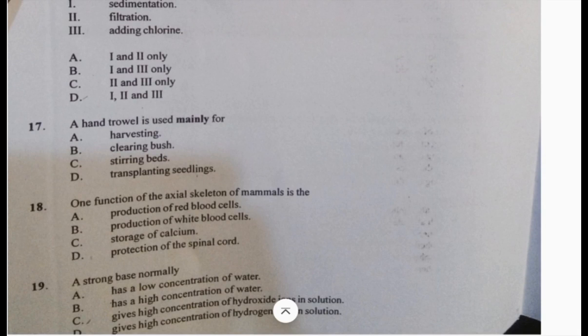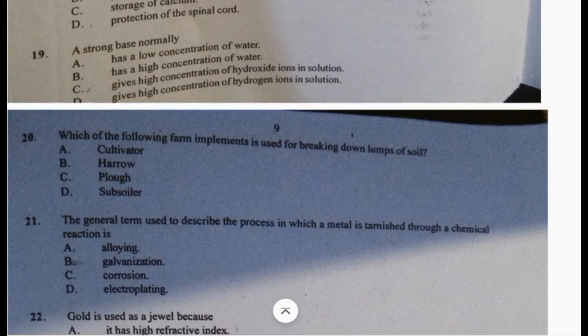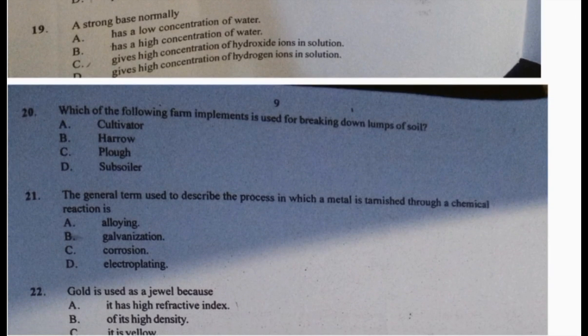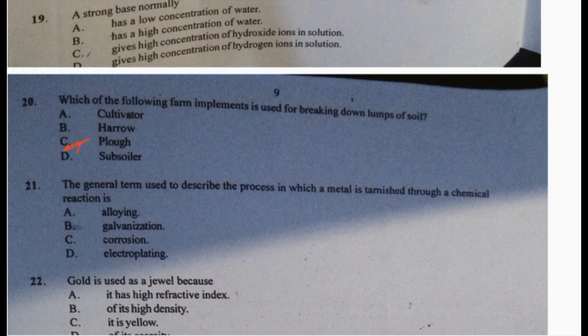Number 19: a strong base normally gives high concentration of hydroxide ions in solution, so the answer is C. Number 20: which farm implement is used for breaking down clumps of soil? A: cultivator, B: harrow, C: plow, D: subsoiler. The answer is B, harrow. Number 21: the general term used to describe the process in which metal is tarnished through chemical reactions is C, corrosion.